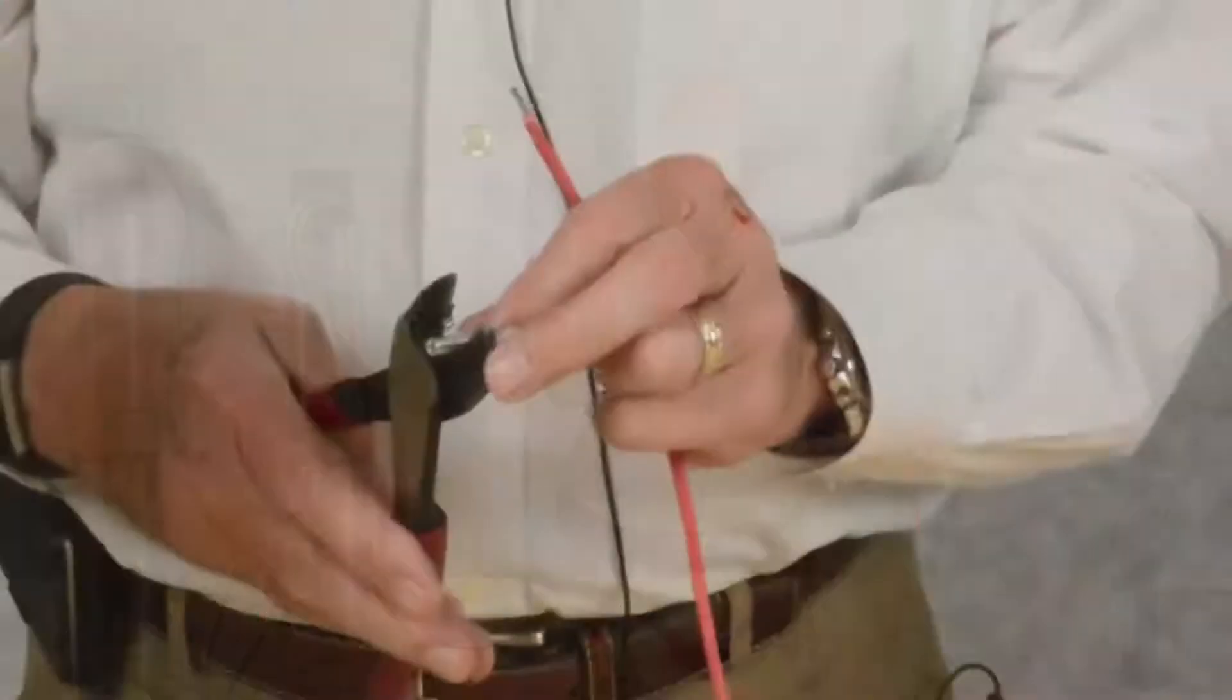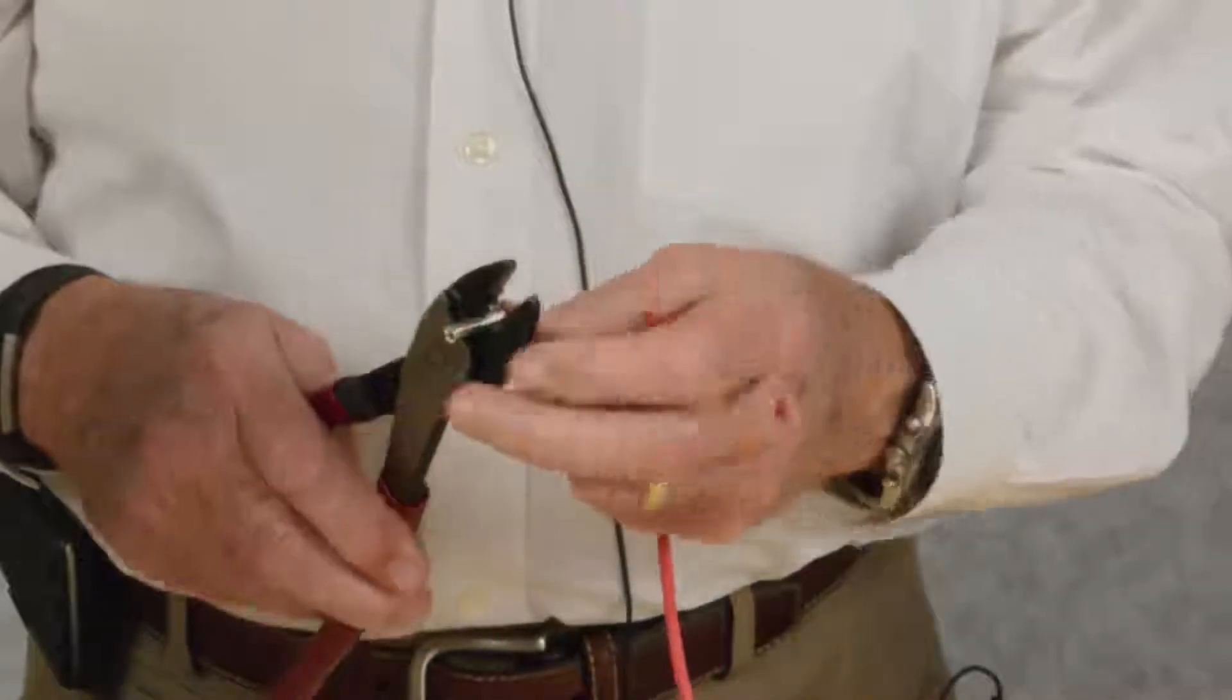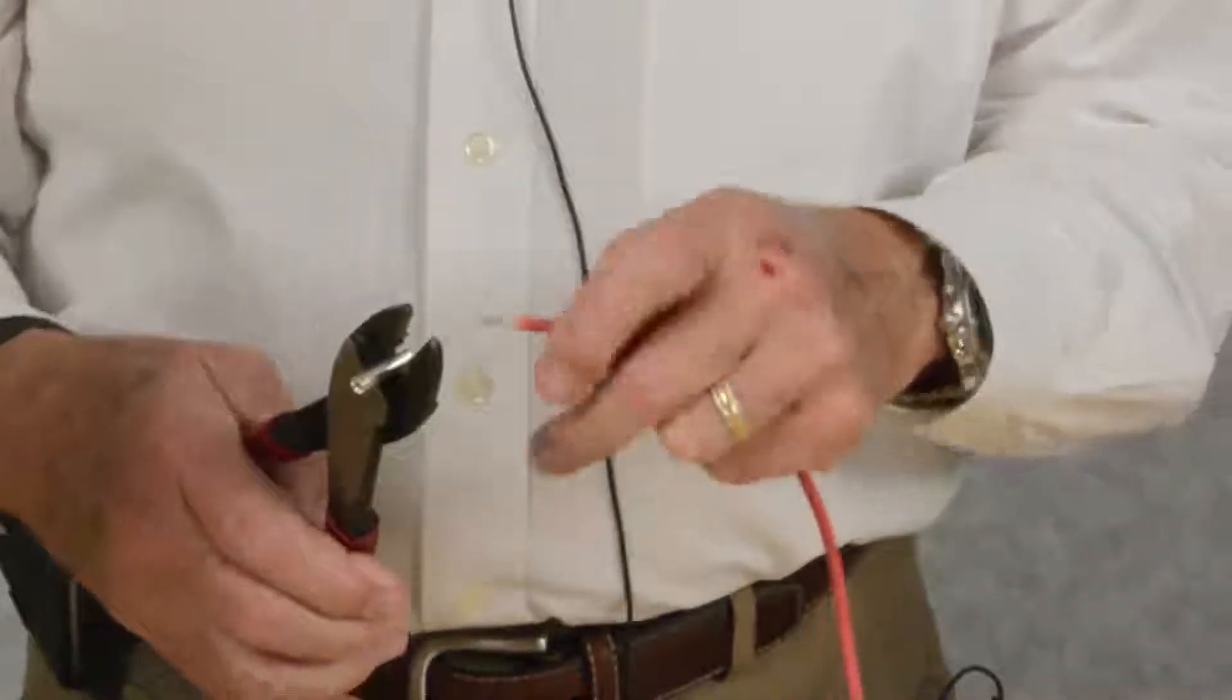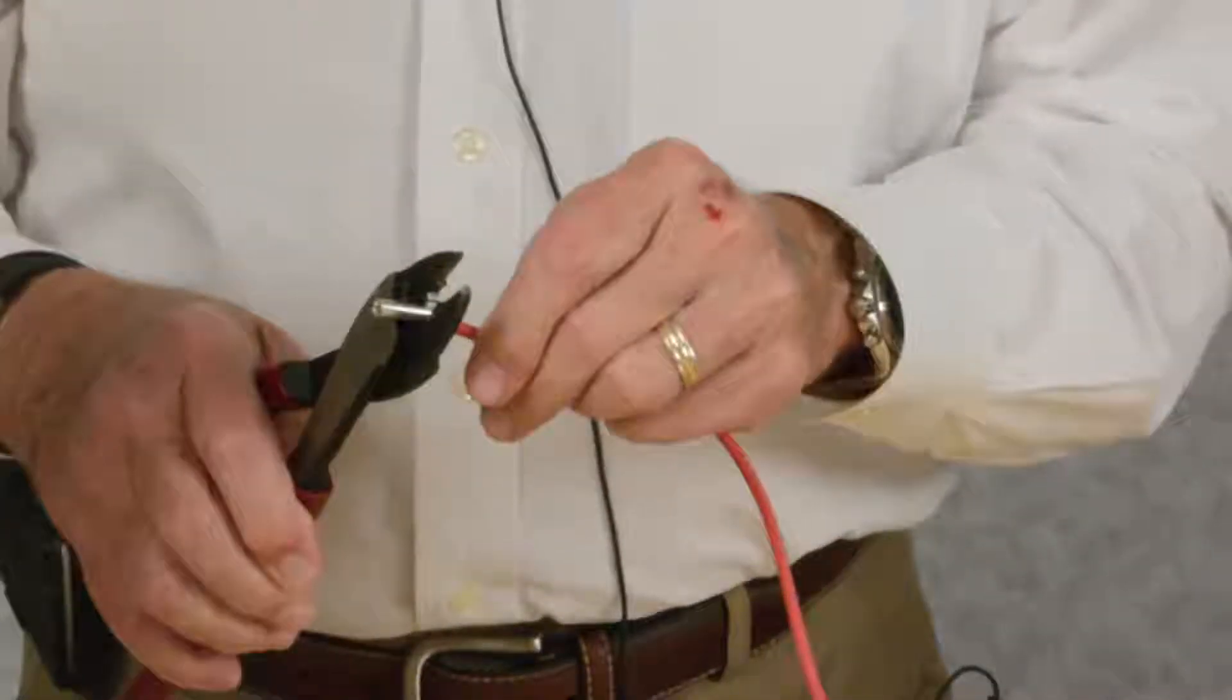Get the corresponding color. Insert your wire into it. Crimp it.